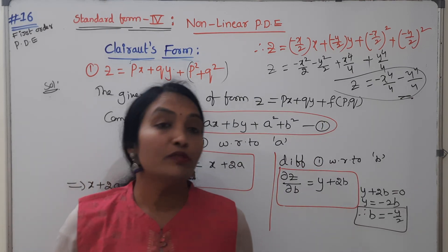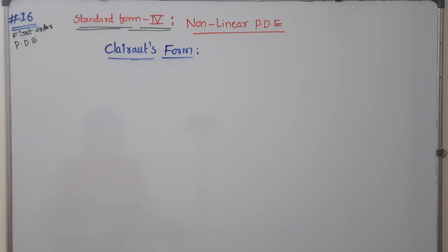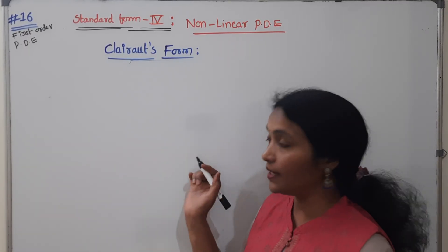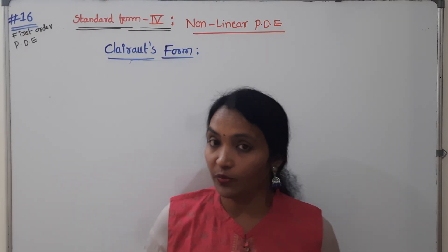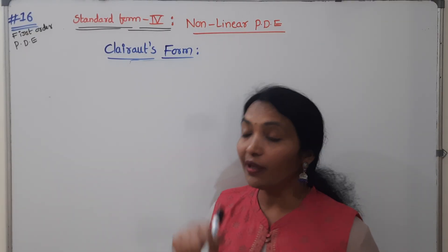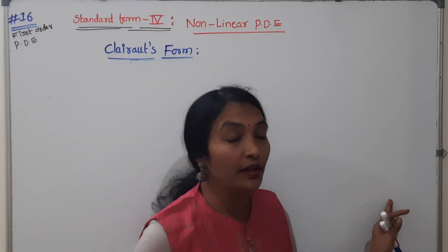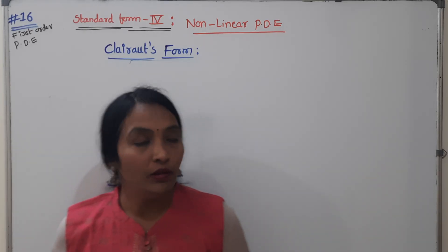Now I will discuss one more problem. This is the problem: solve Z equals X plus BY plus A square B square. If you have to solve the singular form, you will solve the singular form. Now we will discuss one more.